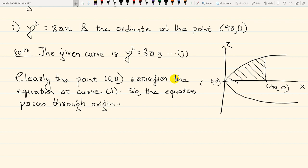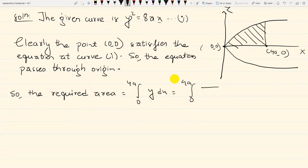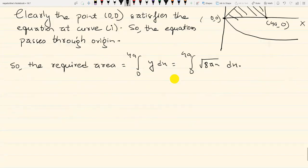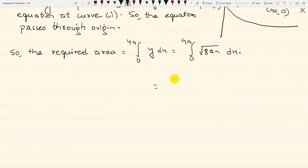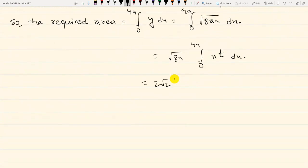The required area is the integral from 0 to 4a of y dx, which equals the integral from 0 to 4a of √(8ax) dx. This gives us 2√2√a times the integral of x^(1/2) dx.